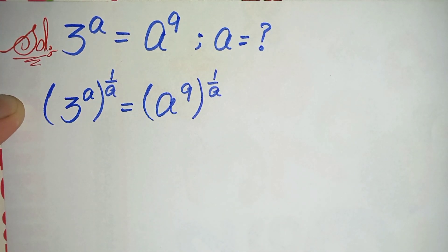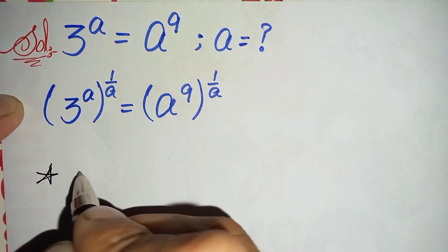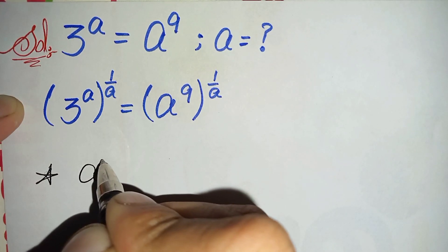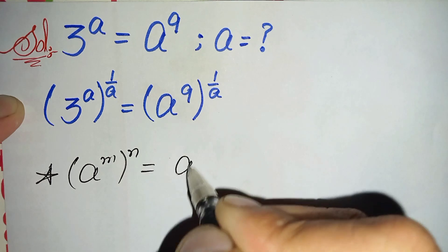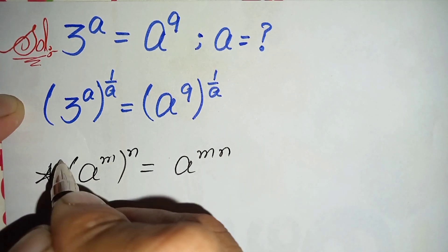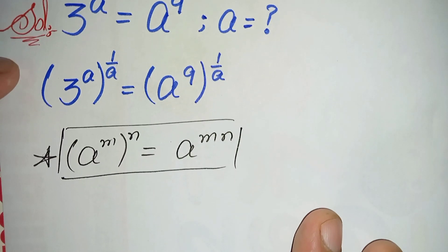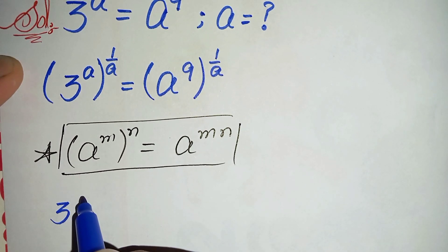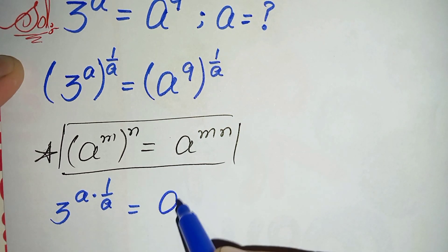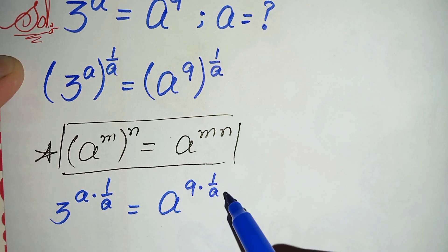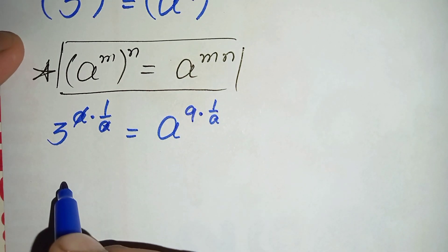On both sides we will use an exponential math property to multiply the powers with each other. We will use this property: a raised to power m, whole raised to power n, which can also be written as a raised to power m times n. Using this exponential property on both sides, the left hand side will become 3 raised to power a times 1 over a, and the right hand side will become a raised to power 9 times 1 over a. We will cancel this a with a, so the left hand side becomes simply 3.